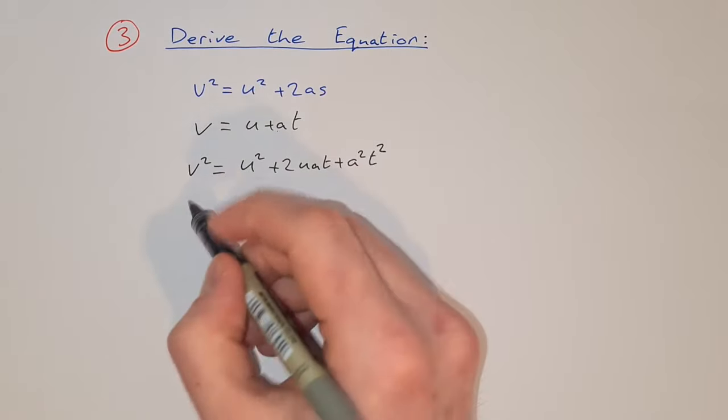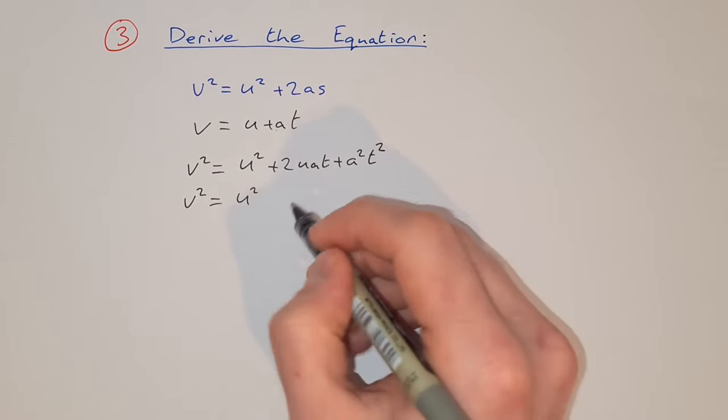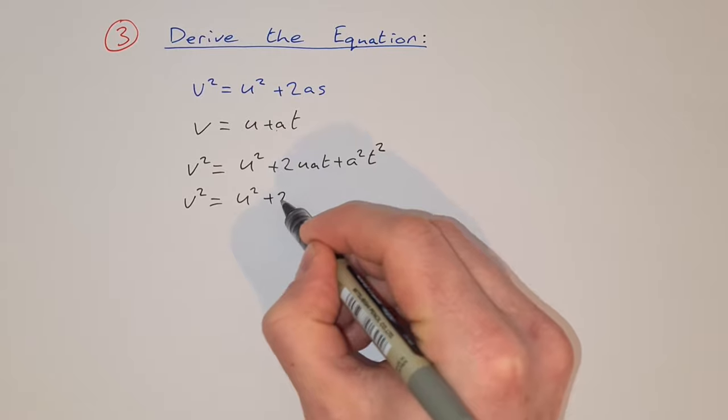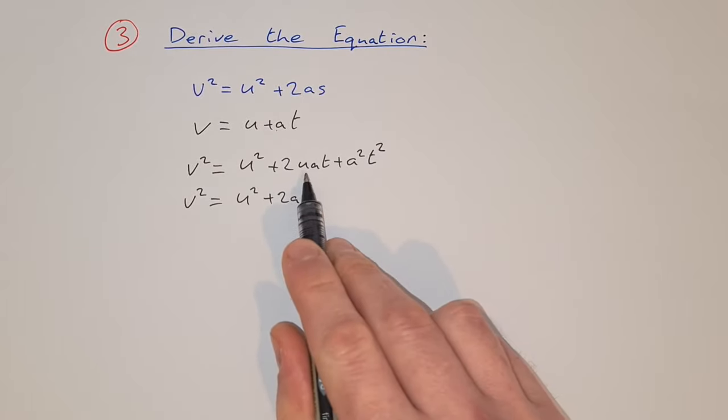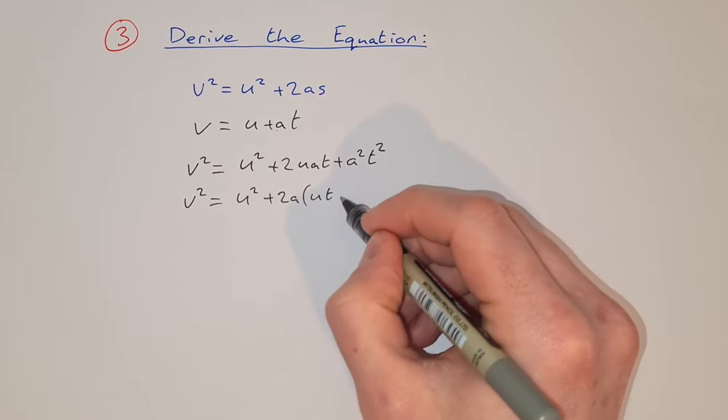Now on the right hand side, what we're going to do is we're going to factor out from here 2a. And that will leave us with ut plus a half at squared.